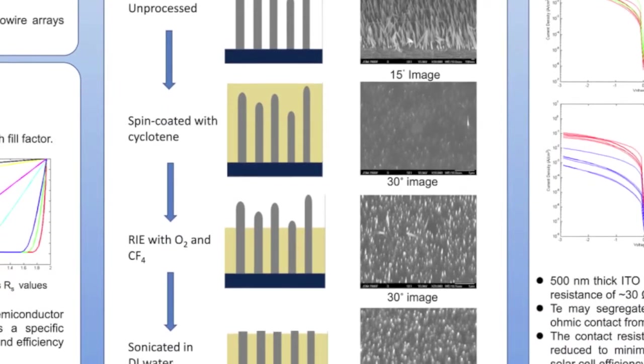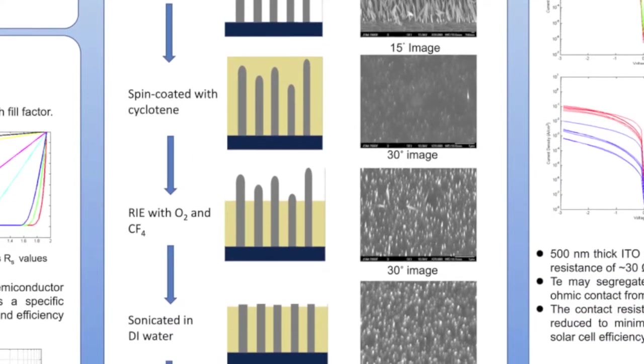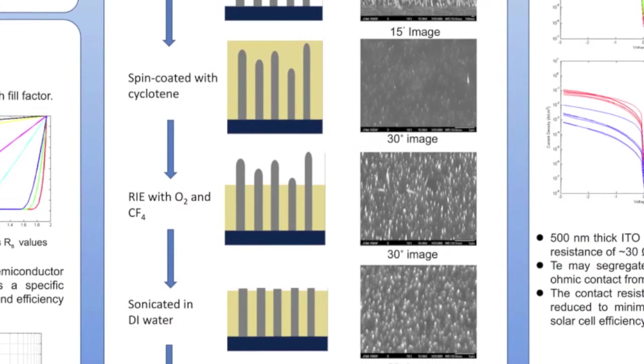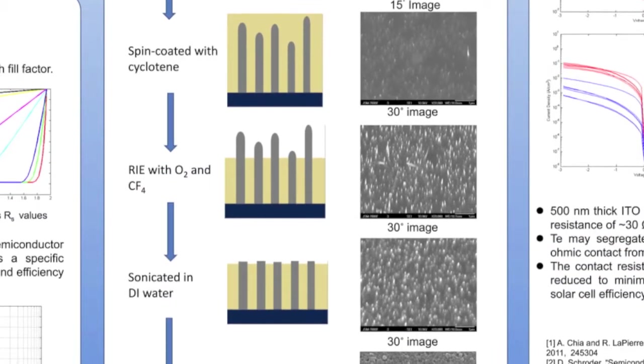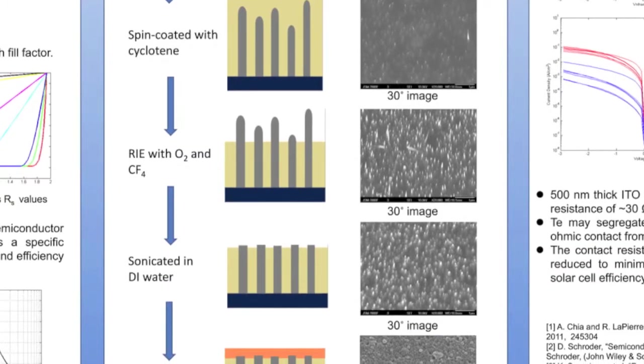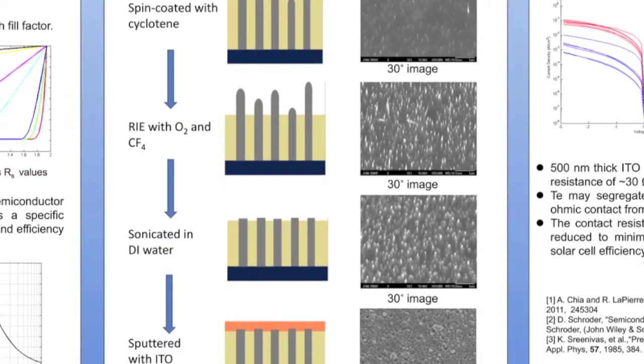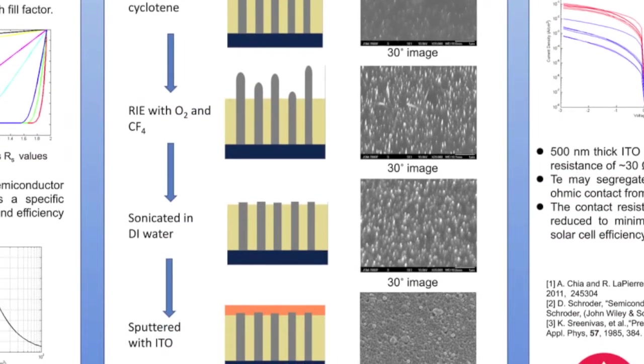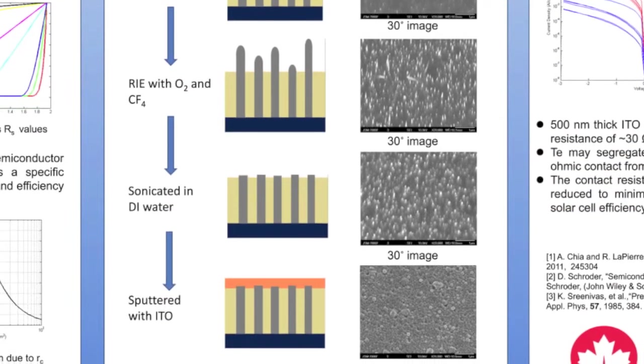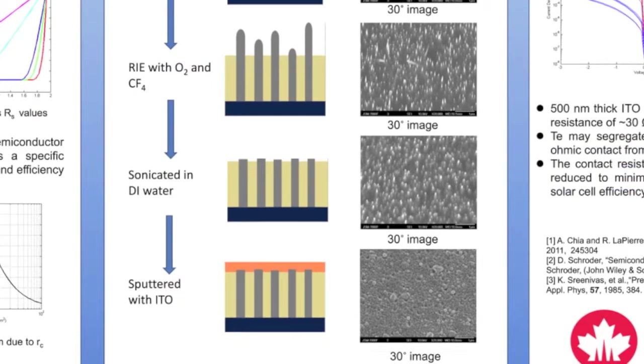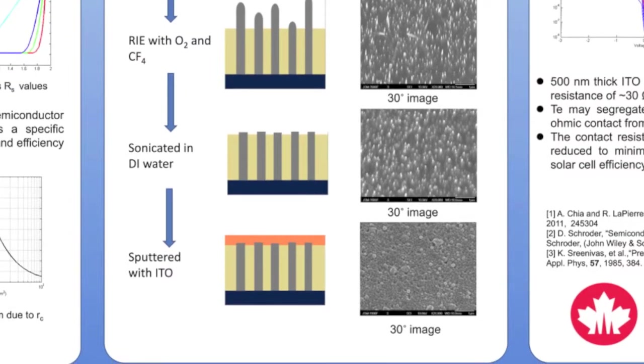If we don't sonicate, because the wires have different heights sticking out of the cyclotene, the ITO will form a ball shape on the top of the wires. So we decided to sonicate them to get the top of the wires off, and we sputtered an ITO layer. We usually do between 250 nanometer or 500 nanometer ITO on top of our device.